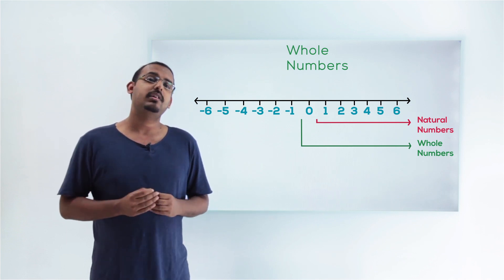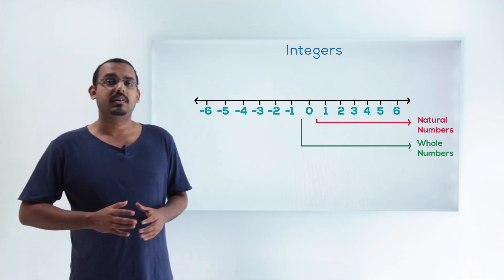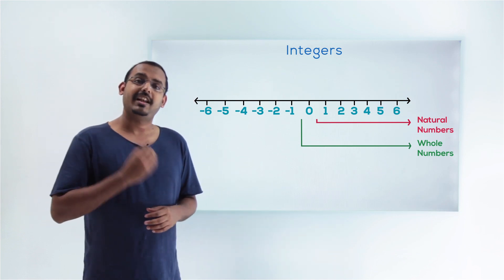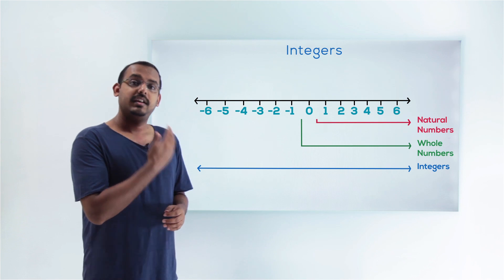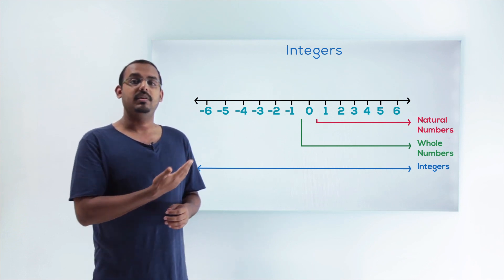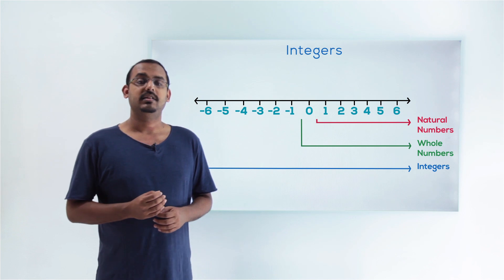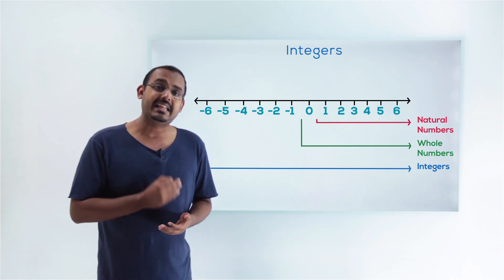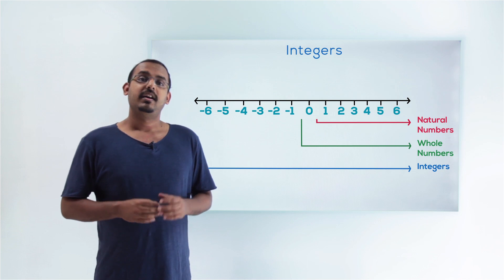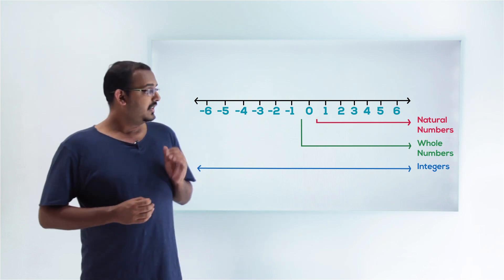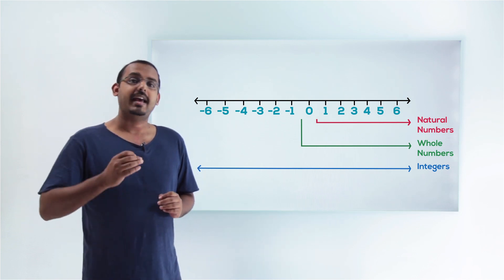We have also learned about integers. Integers are all the numbers which lie on the number line — all the negative numbers, the number 0, and all the positive numbers. All these numbers comprise the integers. Integers also do not have any decimal point or any fractional value. So these are natural numbers, whole numbers, and integers.